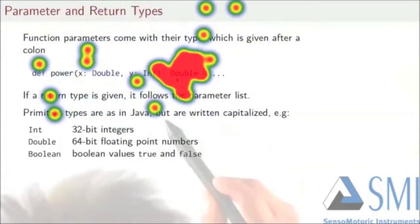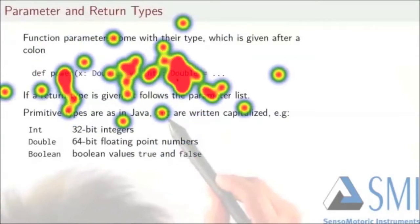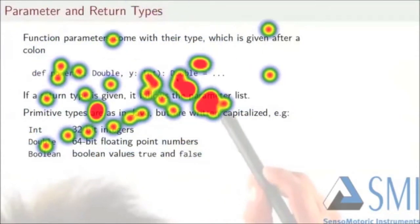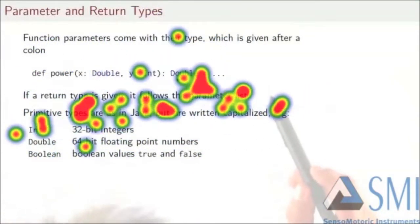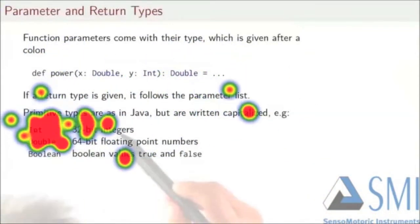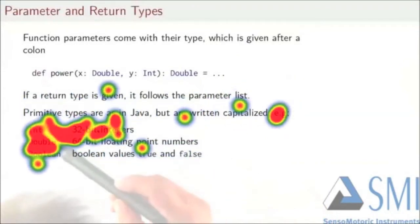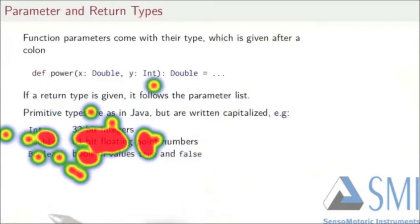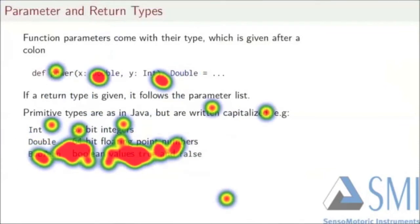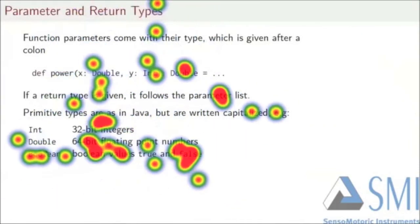The primitive types are written as in Java but they are capitalized. So Int, for example, is a 32-bit integer. Double is a 64-bit floating point number. And Boolean represents the boolean type with values true and false.